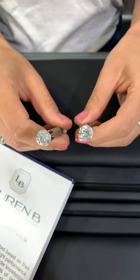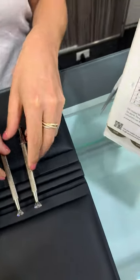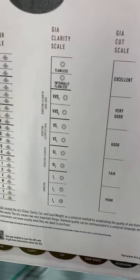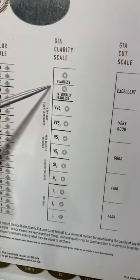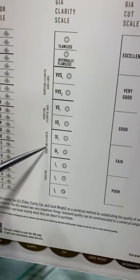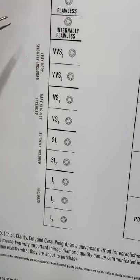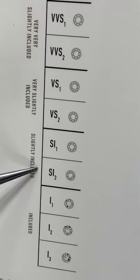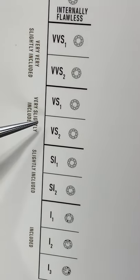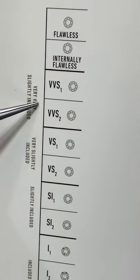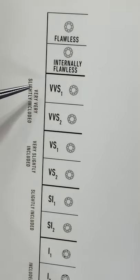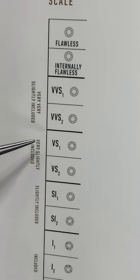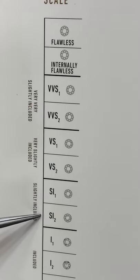Most of our clients are happy with diamonds that are in either the VS or SI range. So I'm going to go through this chart with you here and explain what some of those numbers and letters mean. This is the clarity scale. We work with anything in the SI range and above — SI being slightly included. There's SI1 and SI2, then VS1 and VS2 being very slightly included, and then VVS which would be a much more rare clarity grade. The majority of the diamonds we work with would be probably VVS2 to SI2.